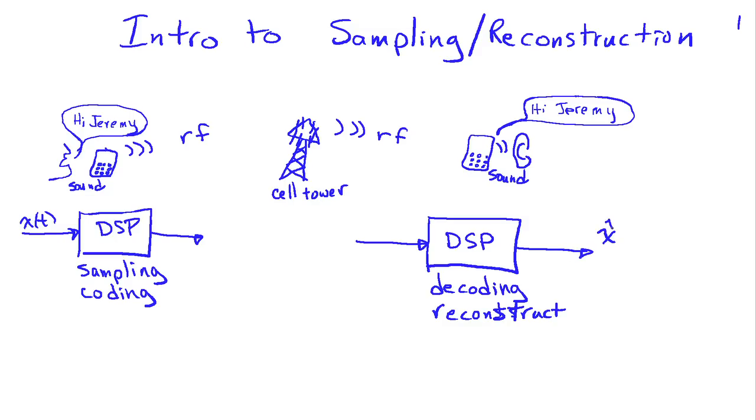If we do this well, hopefully X hat of T is a close approximation to the original sound that we transmitted. One of the interesting things about this is that there's a mixture of continuous and discrete time signals involved in these kind of processes where you're sampling and reconstructing.